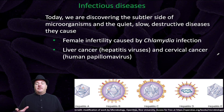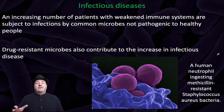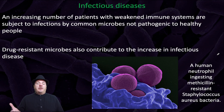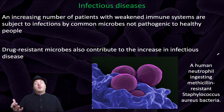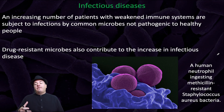For example, female infertility can be caused by chlamydia infections, liver cancer can be caused by the hepatitis virus, and cervical cancer can be caused by HPV, human papillomavirus. Also, an increasing number of patients with weakened immune systems are subject to infections by common microbes that are not pathogenic to healthy people. Drug-resistant microbes can also contribute to the increase in infectious disease — for example, MRSA, which stands for Methicillin-Resistant Staphylococcus aureus, is a bacteria resistant to many antibiotics and is very difficult to fight off.